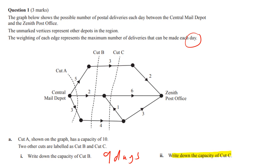Now they've asked us to write down the capacity of cut C. What are we looking for? Backflow. Where is it? We're going to look at this 4 — that's a yes. But the 1 is backflow, so no to the 1. Found some backflow — feel good about that. This 6 we count yes, and then the 3, so it's 3 plus 6 plus 4, which gives us 13 days.